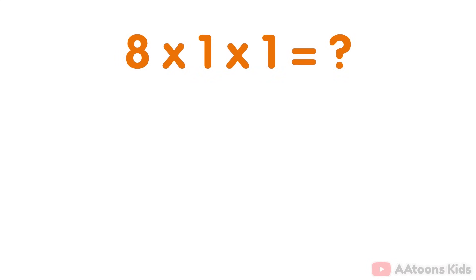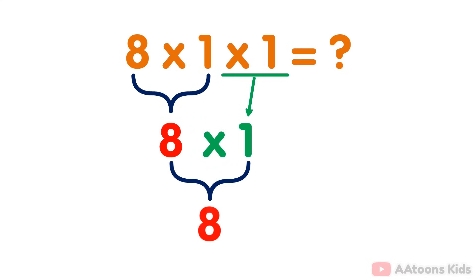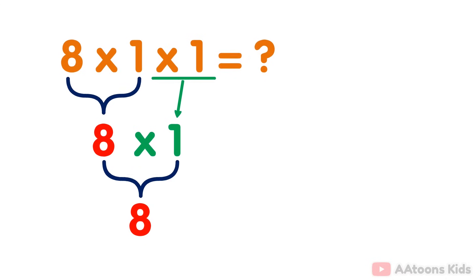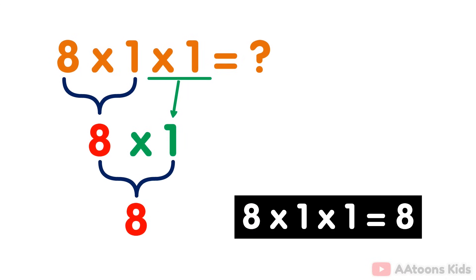The answer to 8 multiplied by 2 multiplied by 2 multiplied by 1 is 8.